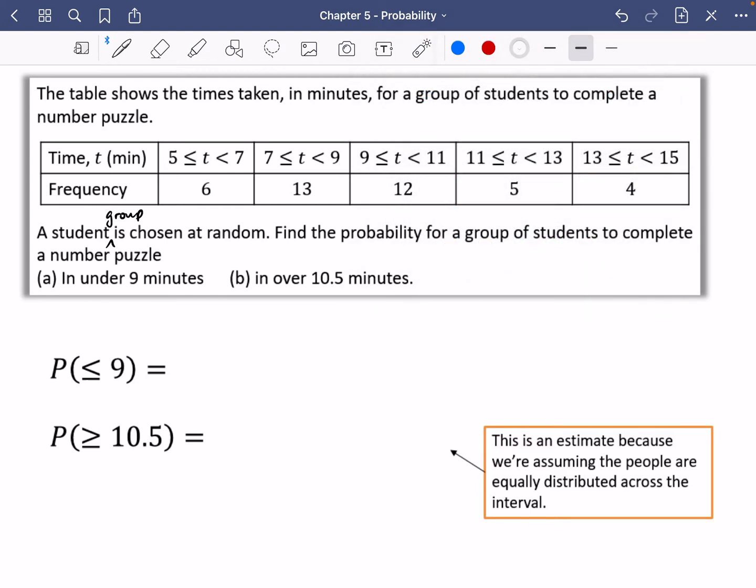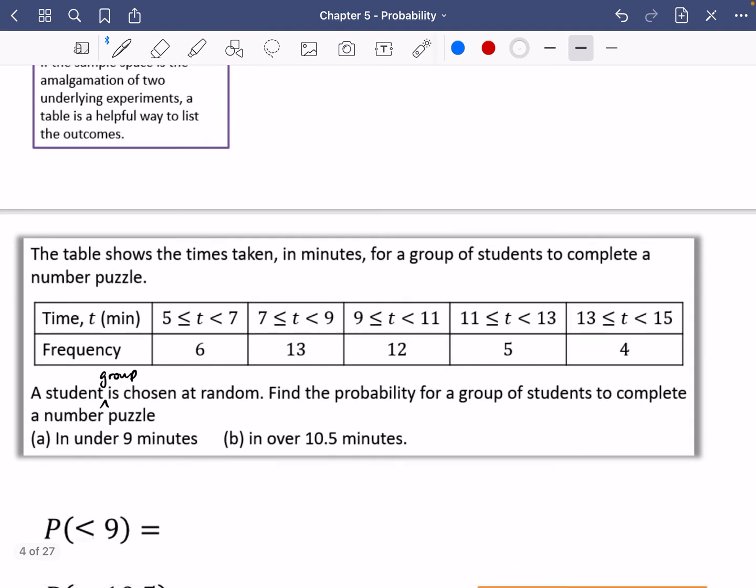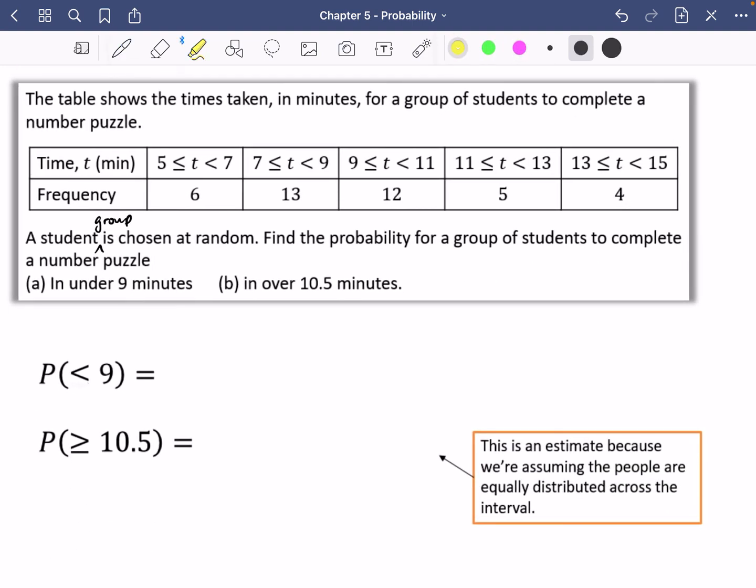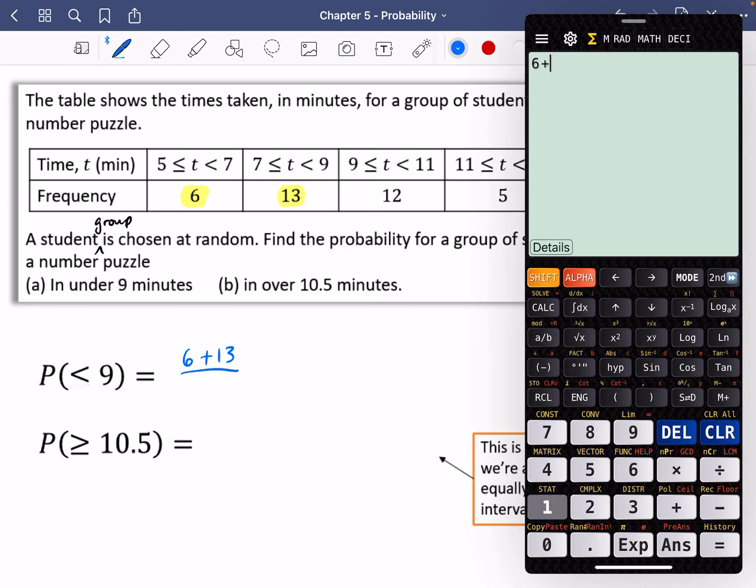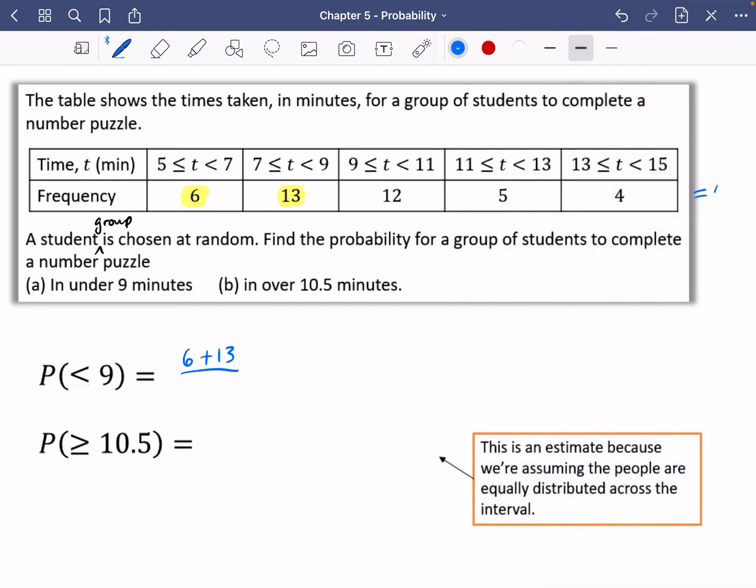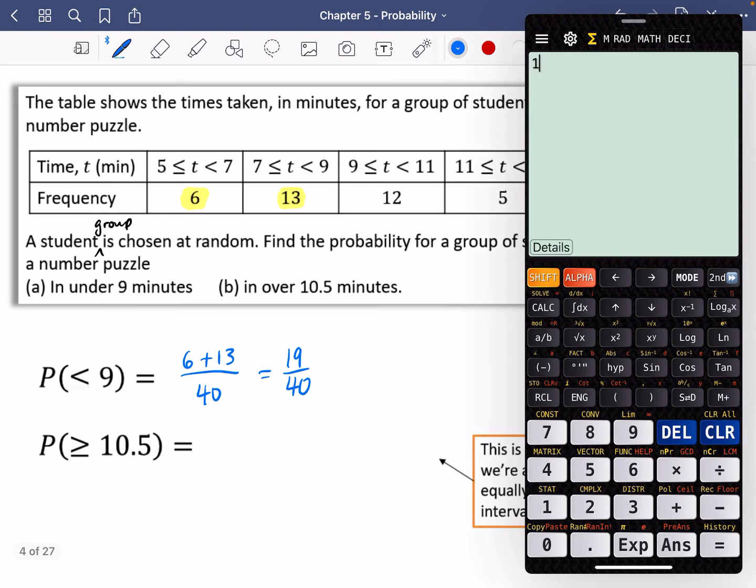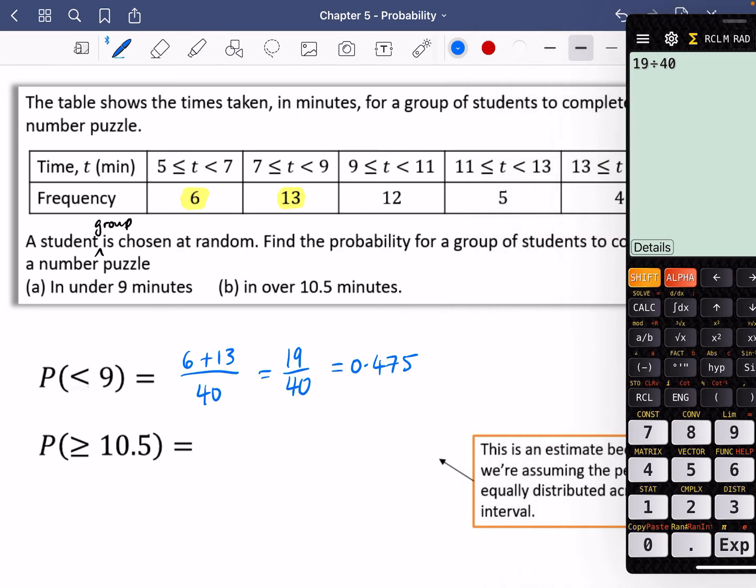If it's under nine minutes, all we need to do is look at how many groups in the table were less than nine minutes. These six people did it in less than nine minutes and these 13 people did it in less than nine minutes. That is six plus 13 out of however many groups there are in total. When I add all of these together, I've got six plus 13 plus 12 plus 5 plus 4, which is 40. So there are 40 people in total. The probability I get here is 19 out of 40. That's going to be preferable to have that as a fraction, but we could do either 0.475 or 19 out of 40.